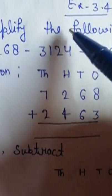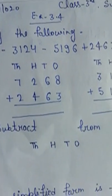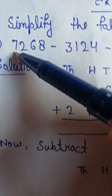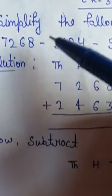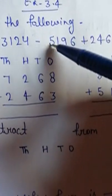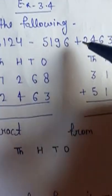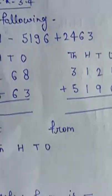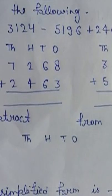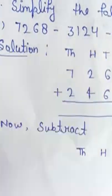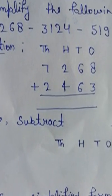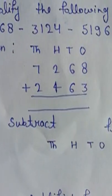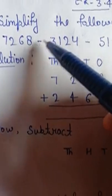Question number 1 में दिया है: Simplify the following. जो numbers दिया है उन्हें simplify — सरल कीजिए. Question 1 का A दिया है: 7268 minus 3124 minus 5196 plus 2463. Simplify. तो इसे हमें simplify करना है. Solution करते हैं. First, we add the numbers having same signs. सबसे पहले हम उन numbers को add करेंगे जिनके same signs हैं.